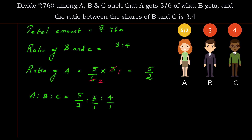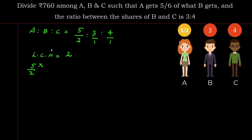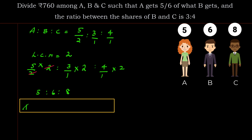Write 3 as 3/1 and 4 as 4/1. The LCM of denominators 2, 1, and 1 is 2. Multiply each term: 5/2 × 2 = 5, 3/1 × 2 = 6, 4/1 × 2 = 8. So the simplified ratio of A : B : C is 5 : 6 : 8.